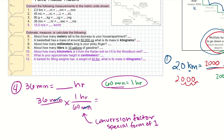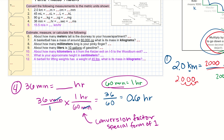So this conversion factor will cancel my minutes and leave me with units of hours. I take 36 times 1 in the numerator divided by 60 in the denominator, which gives me 0.6 hours. So 36 minutes equals 0.6 hours.